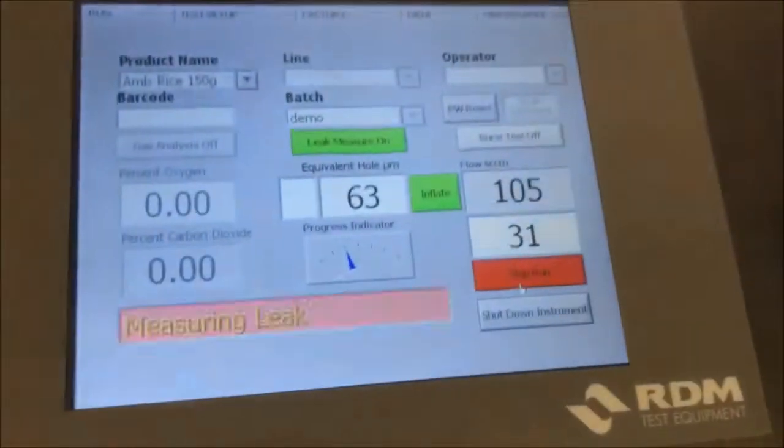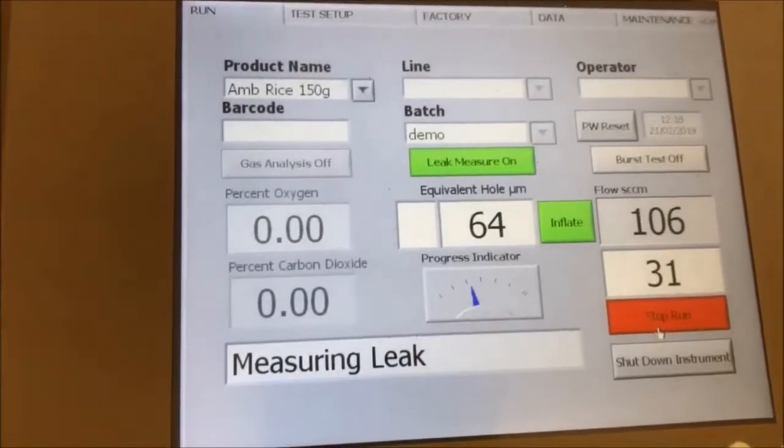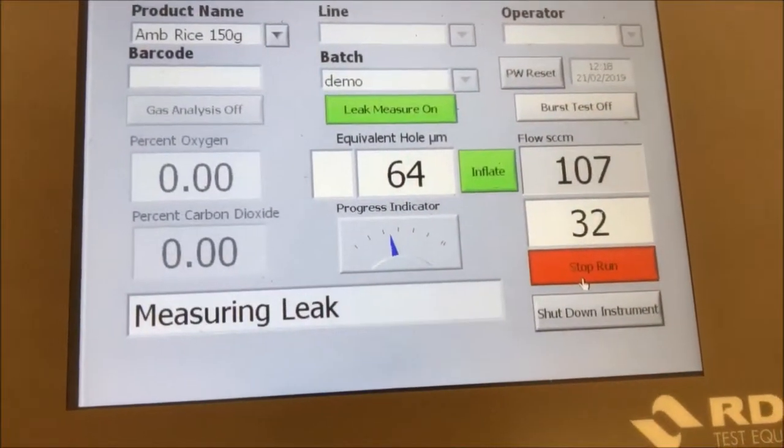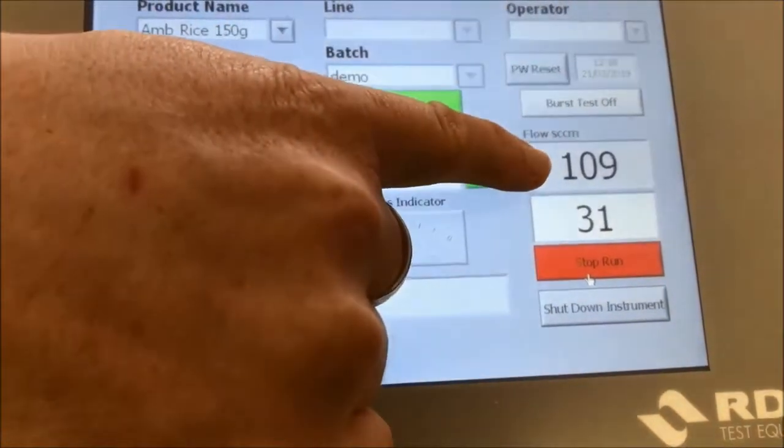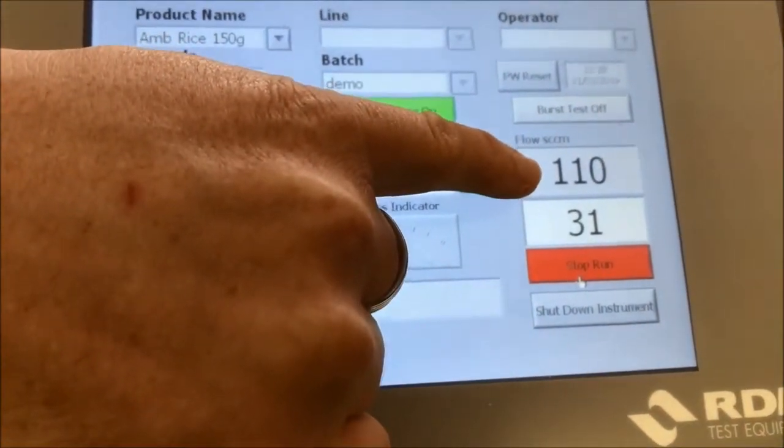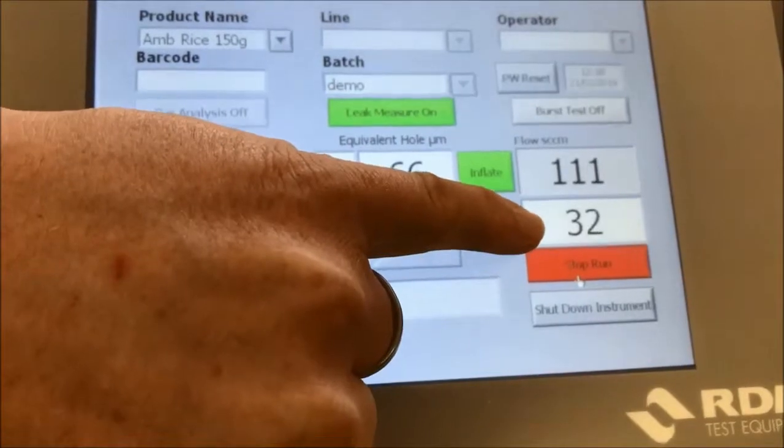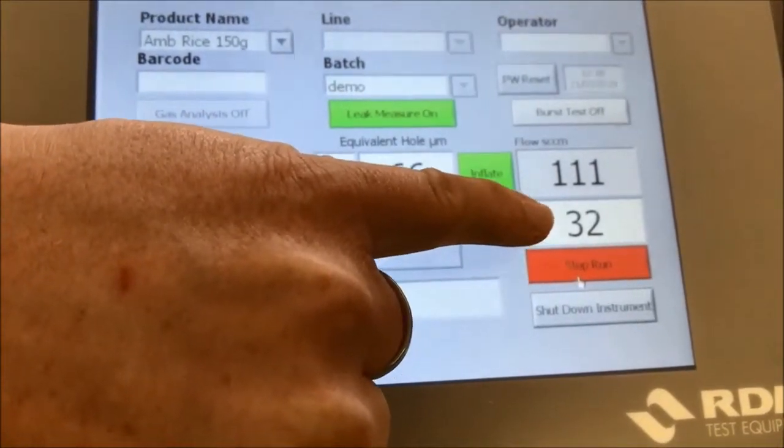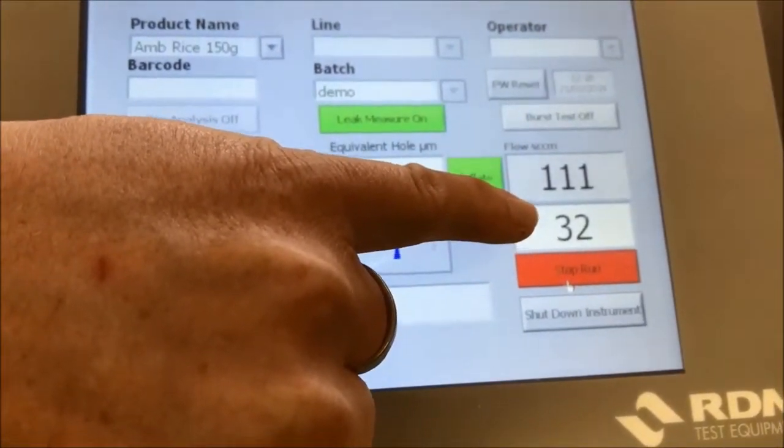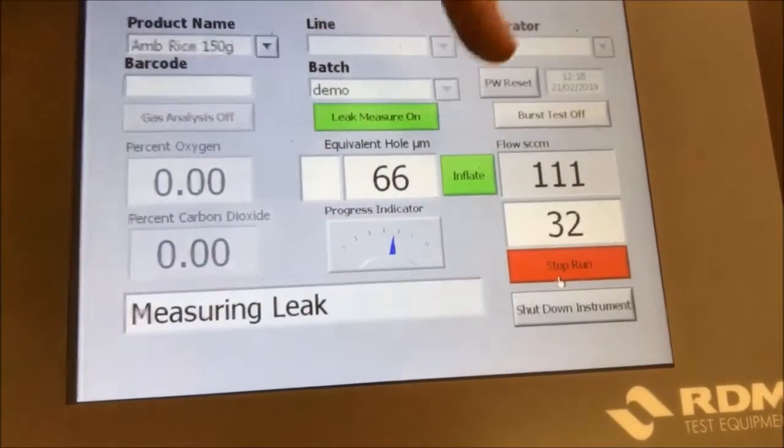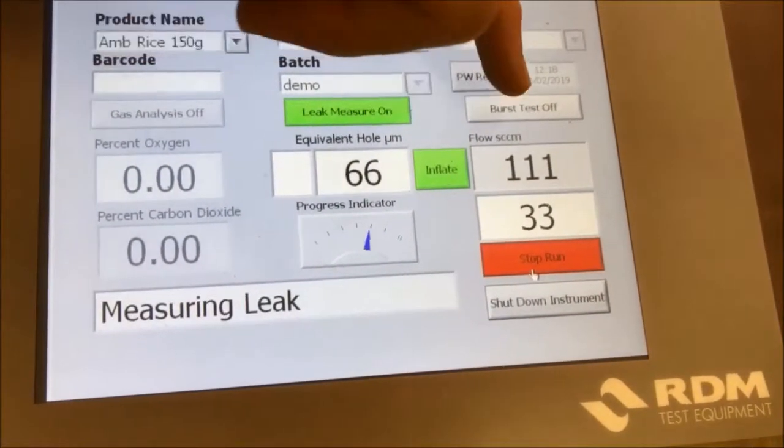Now on the instrument, let's have a look and see what's happening. What we're seeing now is a high airflow going into the pack to try and maintain 50 millibars. We can't get there—we can only get up to 30, 32 millibars. That's then resolving that flow into a hole size, and it's telling me around 66 microns is the hole size of that pack.